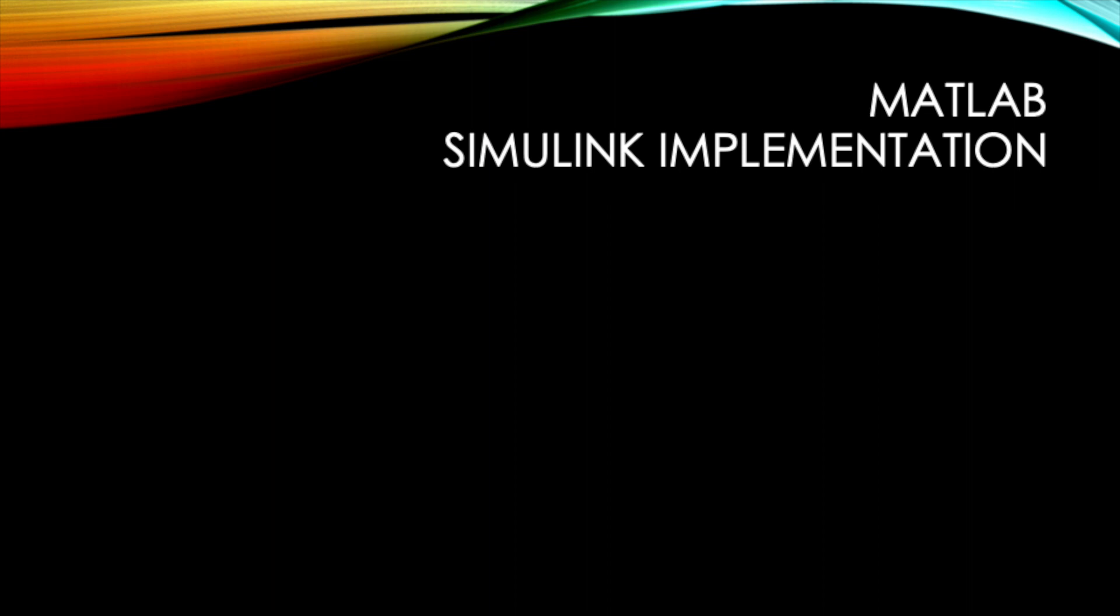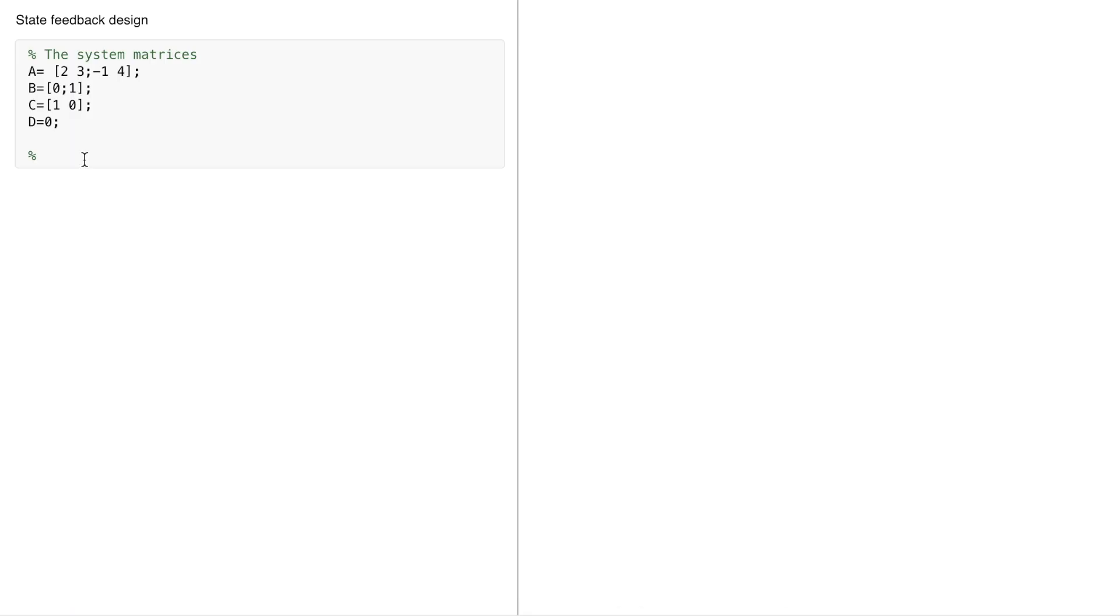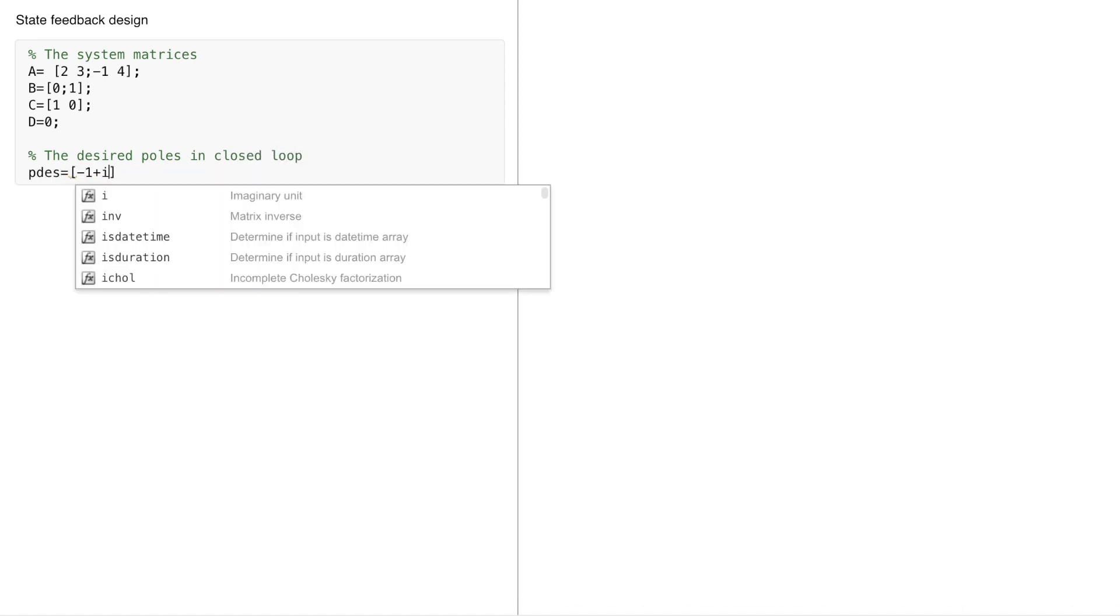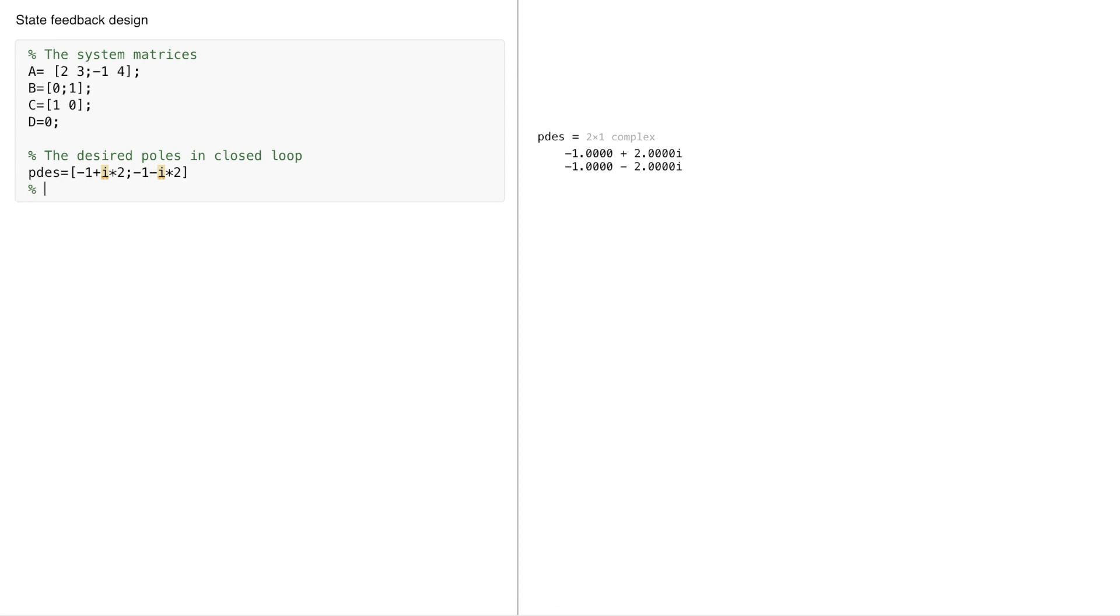In MATLAB simulating implementation, we declare the states and the desired poles are given in pdesired, so i here is the imaginary. We will use acker, but before we have to study the stability of the system in open loop, so we have to find the eigenvalues of a, and we see that they are unstable.